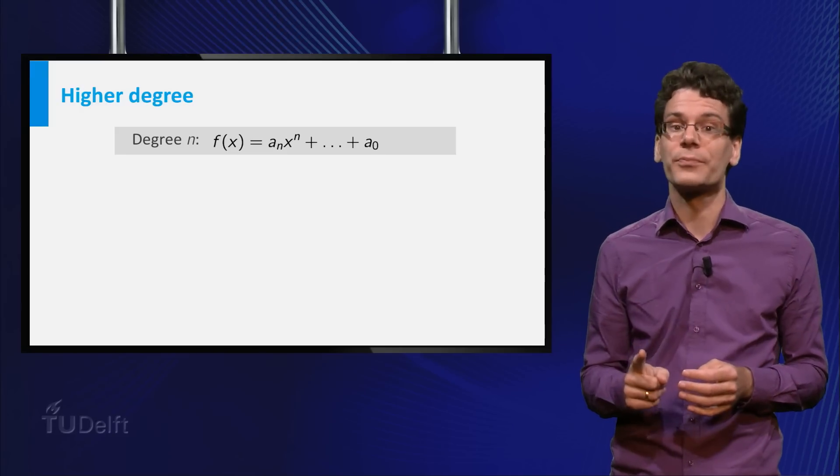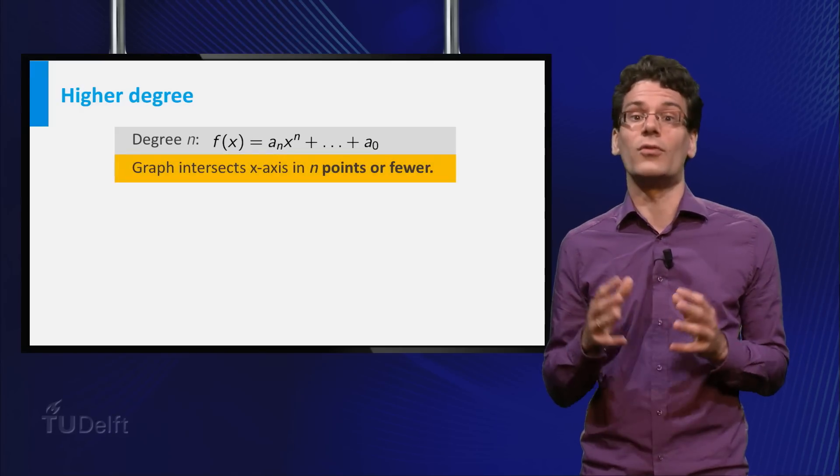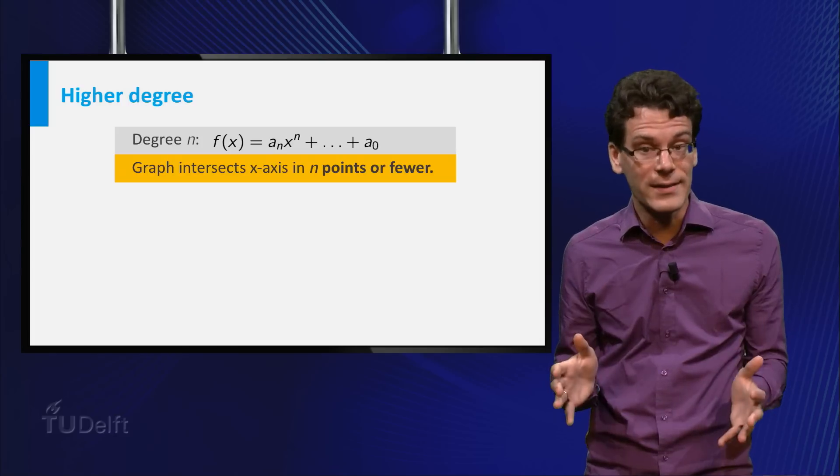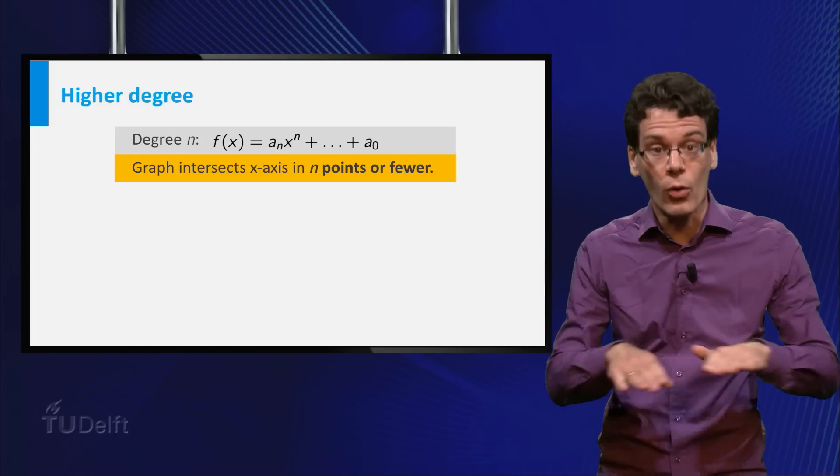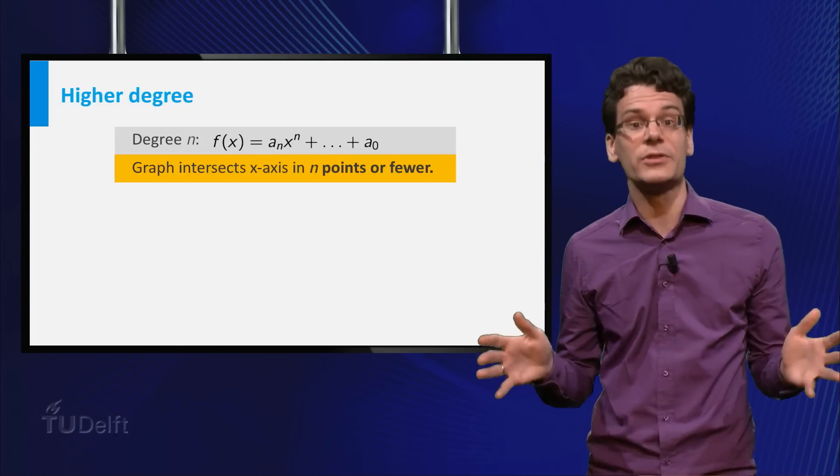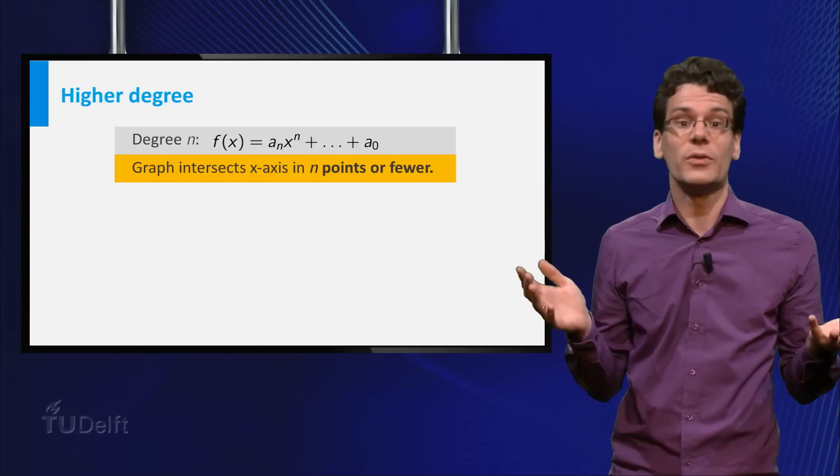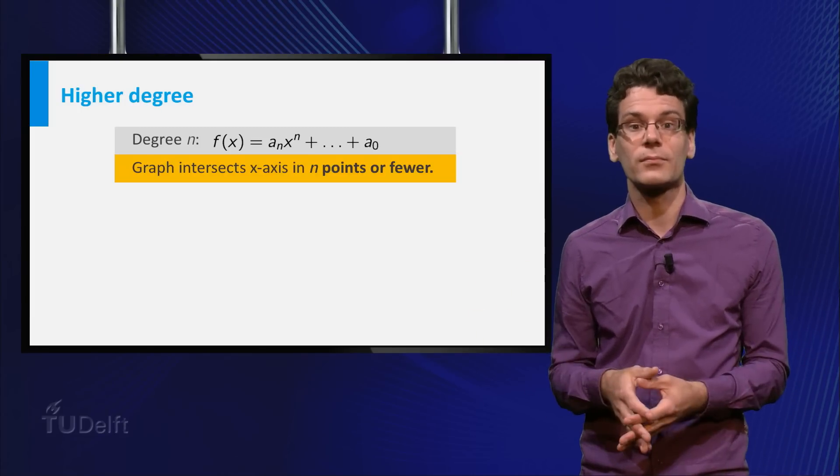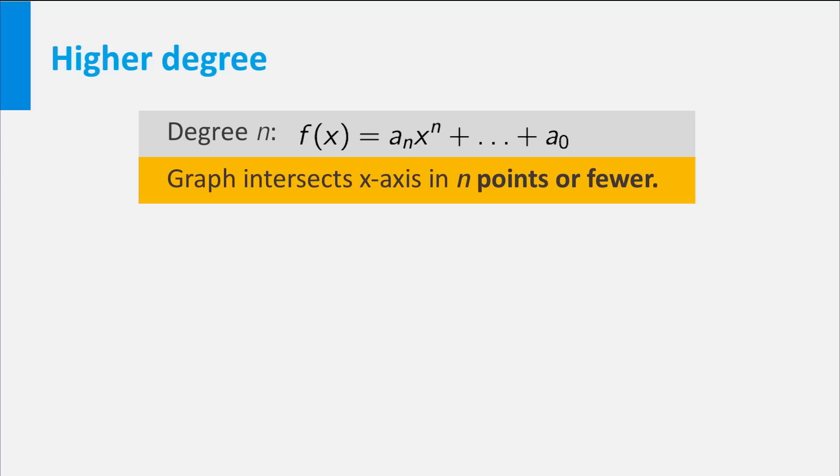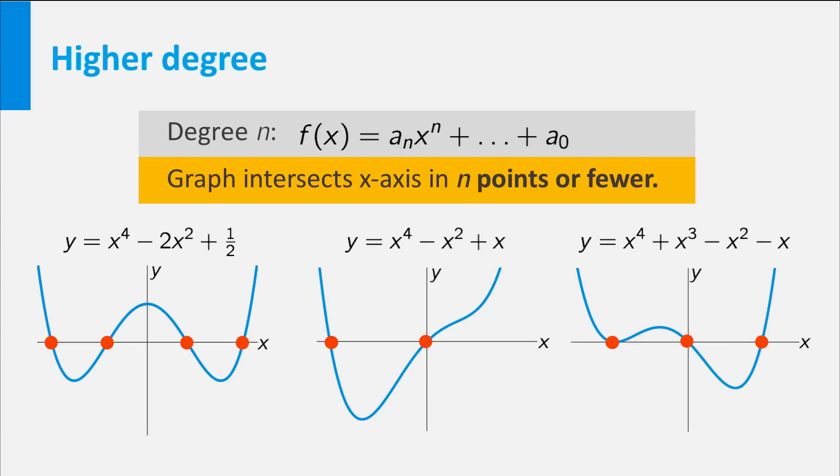In fact, the following is true. If you look at the graph of a polynomial function of degree n, then it will intersect the horizontal axis in n points or fewer. The only exception is the polynomial which is constantly equal to zero. For example, the graph of a degree 4 polynomial function may intersect the horizontal axis in 4 points or in less than 4 points, but never more than 4.